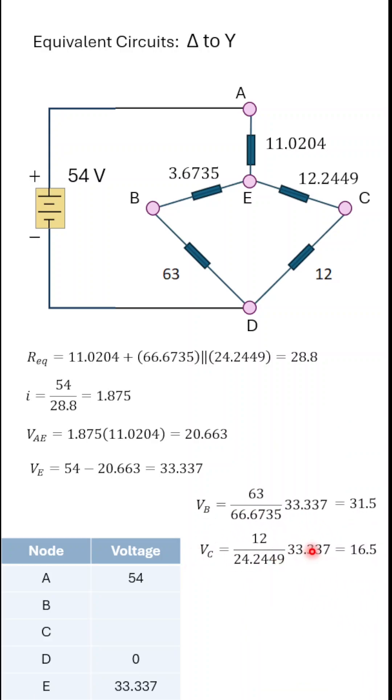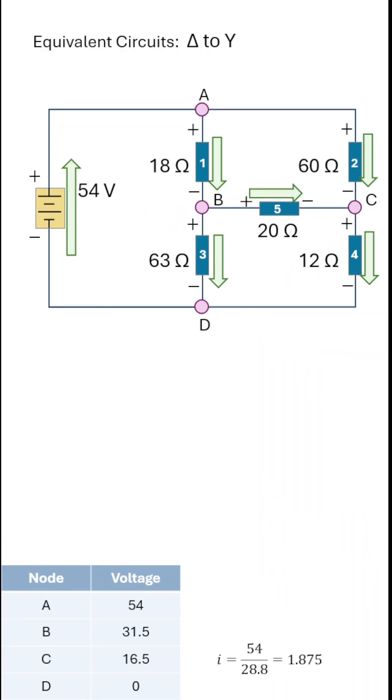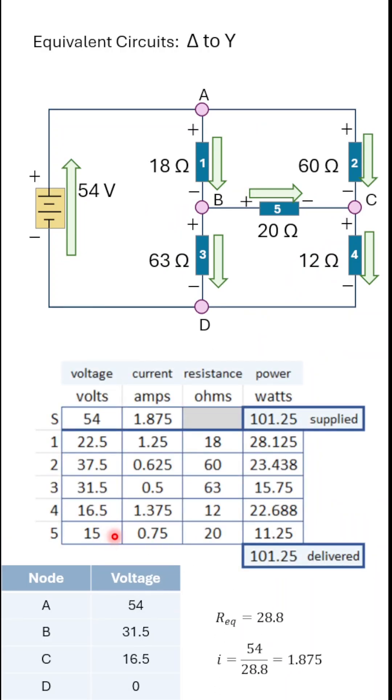And we have a similar voltage divider that includes point C. Let's put those values in our node table. And for each of the resistors, we just find the volts associated with each resistor as the difference in appropriate node voltages. And that's the Wheatstone bridge solved with equivalent circuits starting off with that delta-to-Y transformation.